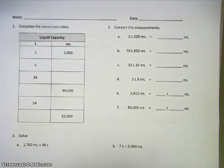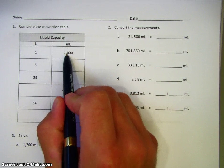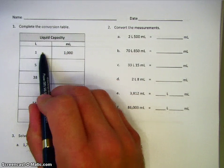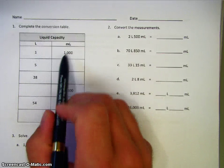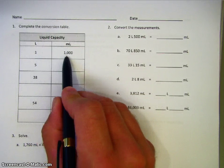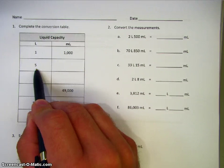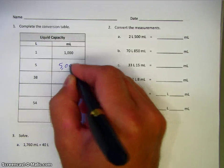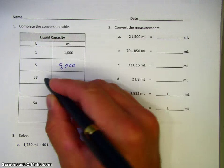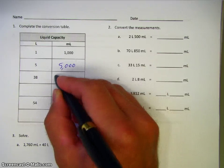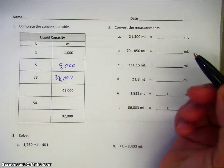A milliliter is one one-thousandth of a liter — milli meaning thousand. So five liters would then be five thousand milliliters. Thirty-eight liters would be thirty-eight thousand milliliters.